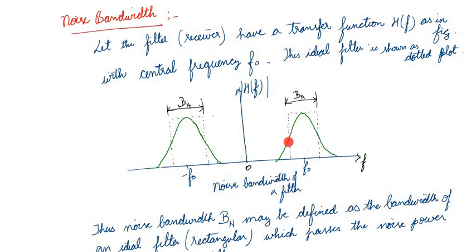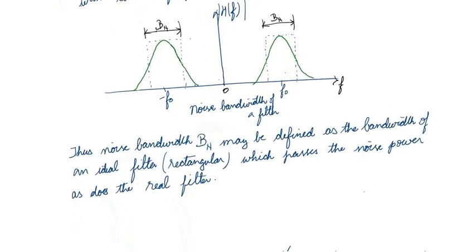This filter is shown in the dotted line, with transfer function H(f) and bandwidth Bn. The noise bandwidth may be defined as the bandwidth of the ideal rectangular filter which passes the noise power as does the real filter.